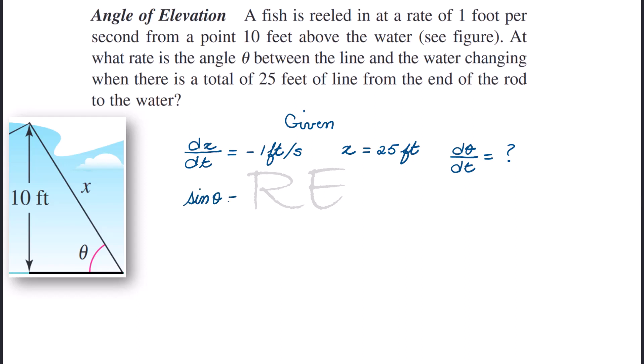Now, sine theta will allow us to get x. Sine is opposite over hypotenuse, so it's 10 over x. Instead of just multiplying, we're going to say that sine theta equals 10 times x to the negative 1.